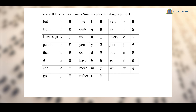There are two words I have not mentioned because they are not using the initial sign. The first is 'it' — for example, 'It is good to be here.' 'It' is represented by the letter X. It is unique in this group because it is not using the initial letter. Another word is 'as' — for example, 'She is as kind as her sister.' 'As' is represented by the letter Z, which is also not an initial sign of that word. So altogether, we have 23 simple upper word signs in Group 1. Out of the 23, 19 use initial letter signs, and only two — 'it' and 'as' — use different letters.